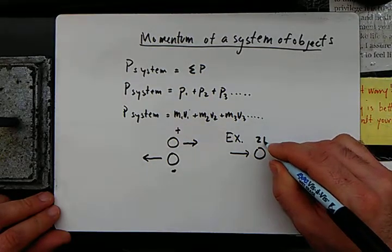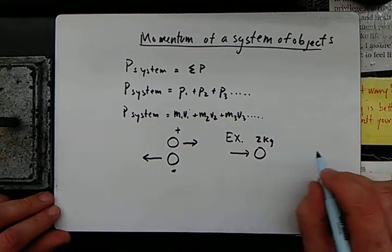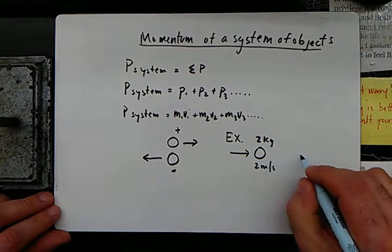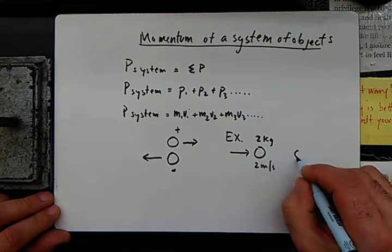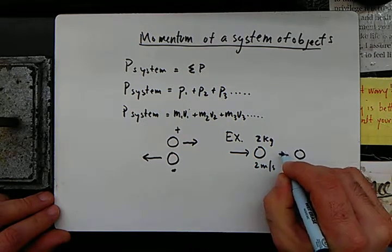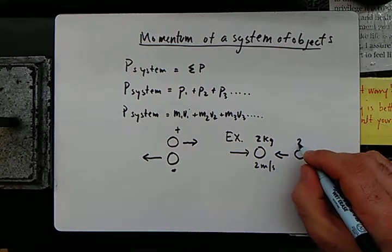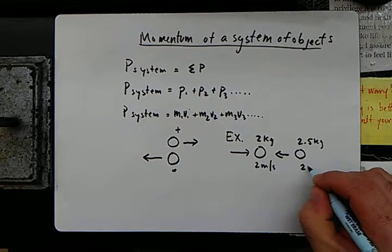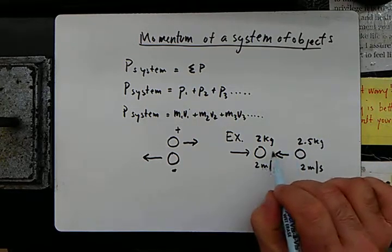kilograms—a pretty large billiard ball—going to the right at two meters a second. And then another billiard ball that's coming this way, we'll say it's two point five kilograms and it's going two meters a second.